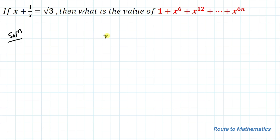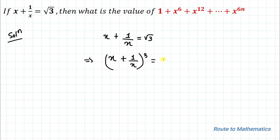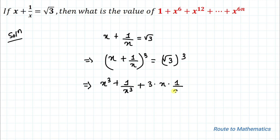The given equation is x plus 1 by x equals to root 3. Let's cube both sides of the equation. So we have x plus 1 by x, whole cube, equals to root 3 cube. Applying the algebraic identity, we can write x cube plus 1 by x cube plus 3 multiplied with x multiplied with 1 by x, whole multiplied with x plus 1 by x, equals to 3 root 3.